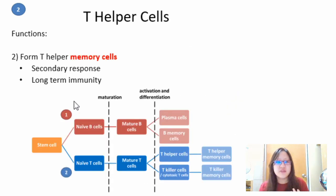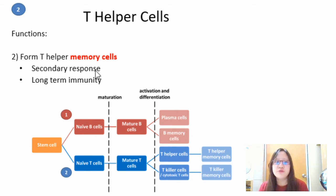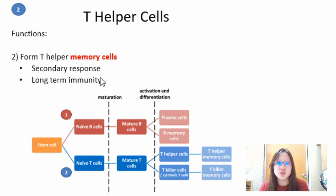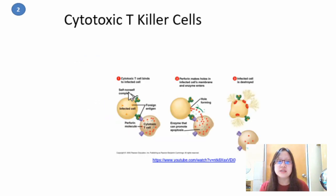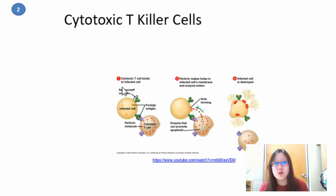The second function of T helper cells is to form T helper memory cells, which are responsible for the secondary immune response and long-term immunity. Now let's talk about cytotoxic T killer cells. They produce toxins — that's why they're called cytotoxic, meaning toxic to cells.